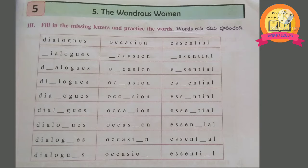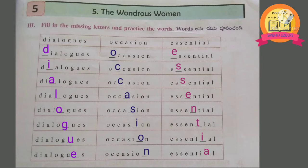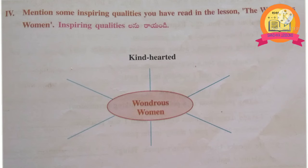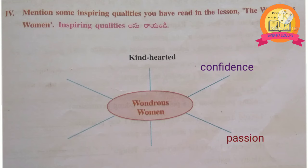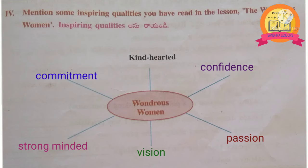Fill in the missing letters and practice the words. Children, let us write the missing letters for the given words: D-I-A-L-O-G-U-E-S – dialogues; O-C-C-A-S-I-O-N – occasion; E-S-S-E-N-T-I-A-L – essential. 4th Roman: mention some inspiring qualities you have read in the lesson – The Wondrous Woman: kind-hearted, confidence, passion, vision, strong-minded, commitment.